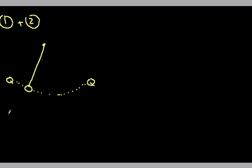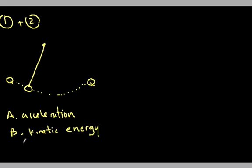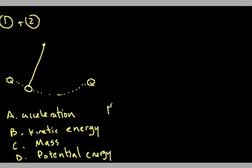So you have a bunch of categories: A is acceleration, B is kinetic energy, C is mass, D is potential energy, and finally E is velocity.